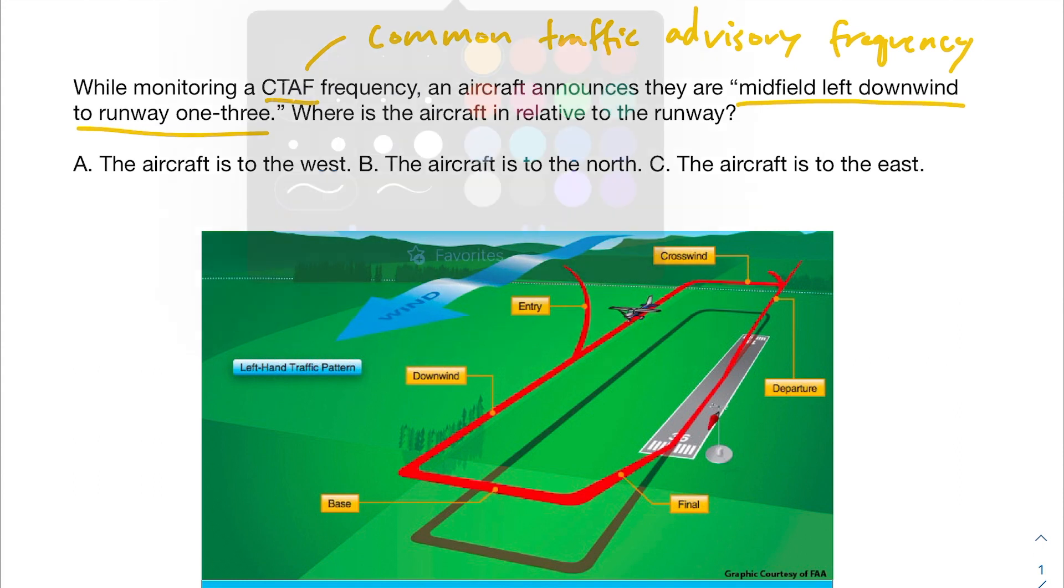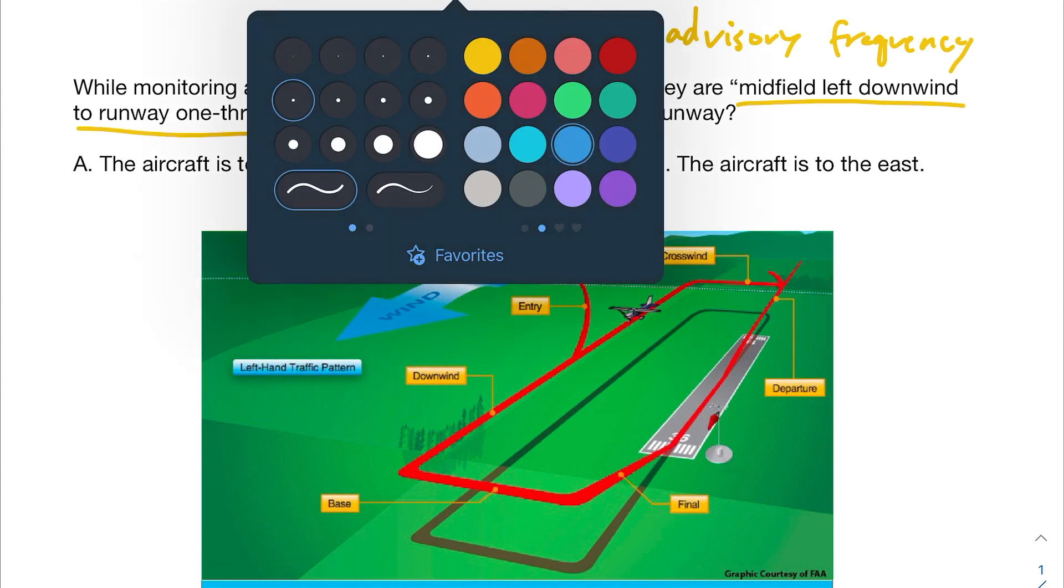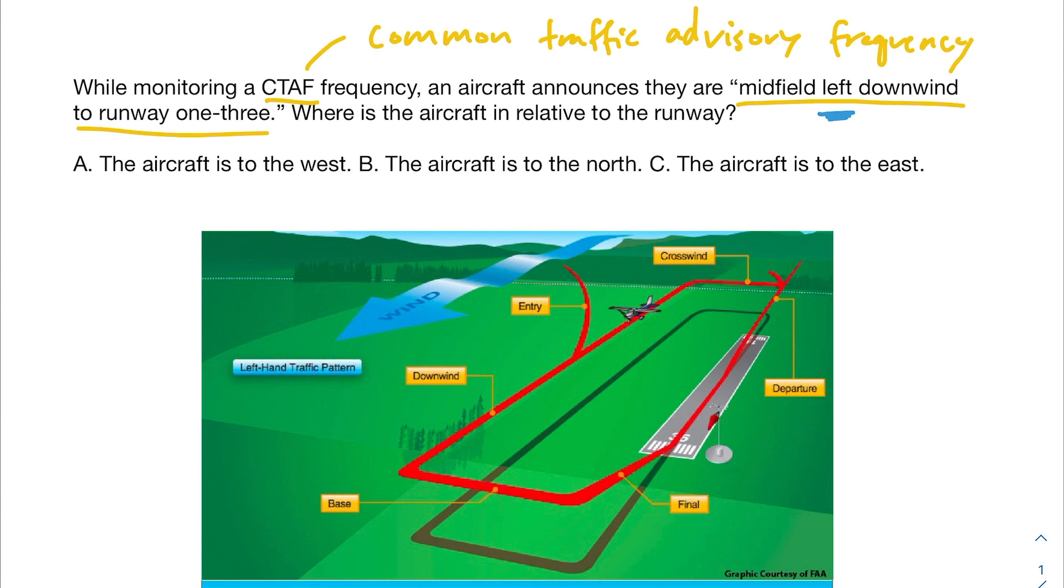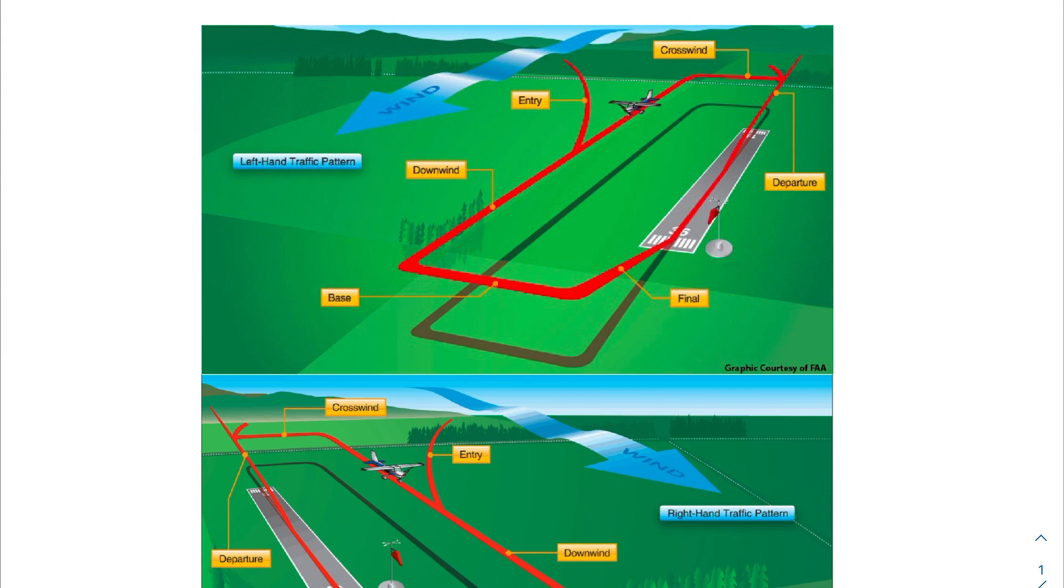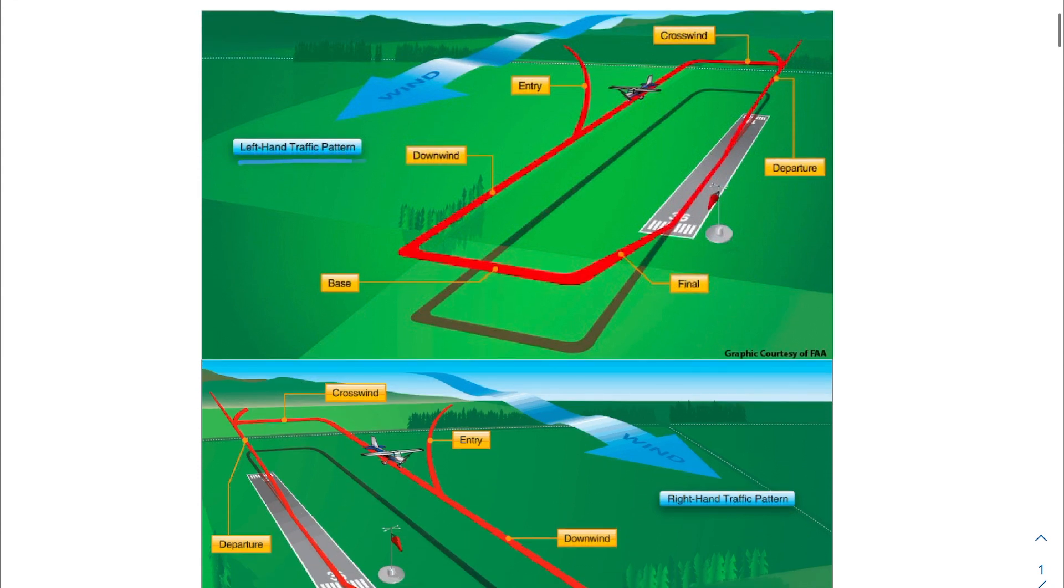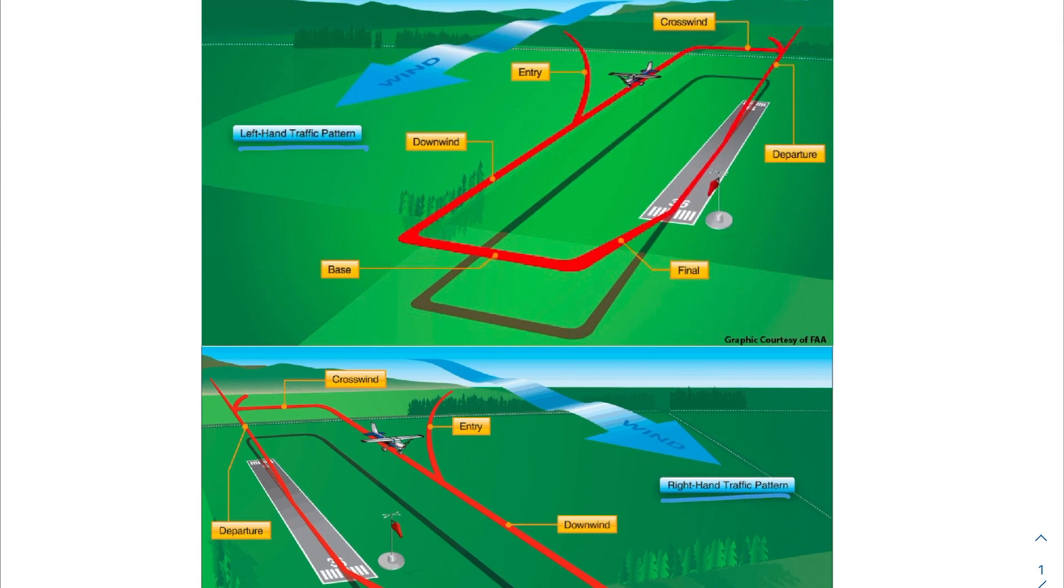So the first part I want to get into is what we're describing as this left. What does it mean when a pilot says they're left? Well, this corresponds with the traffic pattern. So in most airports, unless otherwise noted somewhere, airplanes should be following what's called a left-hand traffic pattern. Its opposite would be the right-hand traffic pattern. So this means that when a plane is turning, left-hand means that they will be turning left. Right-hand means they'll be turning right. So you'll see as the plane follows this downwind path, when they get to the base leg, they turn left.